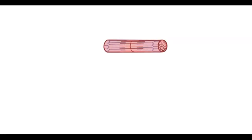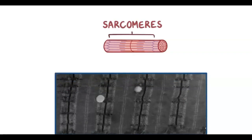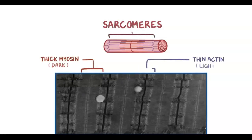As it turns out, these thick and thin filaments don't extend along the entire length of the myocyte, but instead they're arranged in short units called sarcomeres. When we look at sarcomeres with an electron microscope, the thick myosin filaments look dark, while the thin actin filaments look light, which gives the muscle fiber a striped appearance.